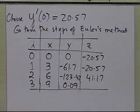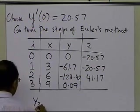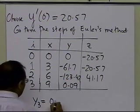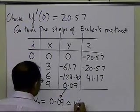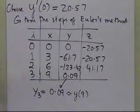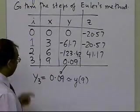So you can really see that now y3 which you are getting here is 0.09, which is this number, which is approximately equal to y9. So you are finding out that this number is now getting close to 0.